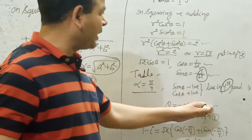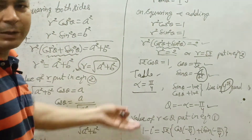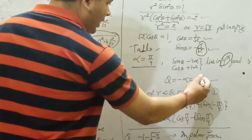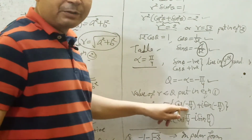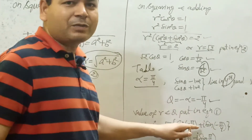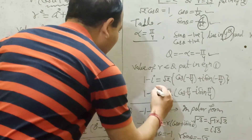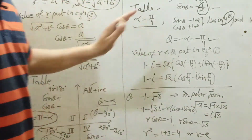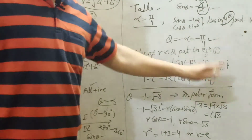Now R equals root 2 and theta equals minus pi by 4. Put these in equation one: 1 minus i equals root 2 times (cos(−π/4) + i sin(−π/4)). Since cos(−θ) = cos θ, this becomes cos(π/4). And since sin(−θ) = −sin θ, we get minus i sin(π/4). So the polar form is root 2 times (cos π/4 minus i sin π/4). This is your final answer — the polar form, also called modulus argument, modulus amplitude, or trigonometric form.